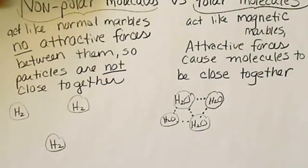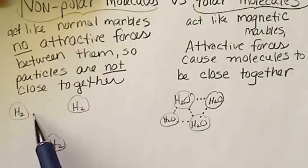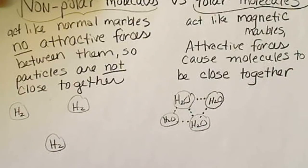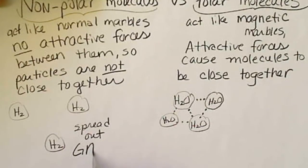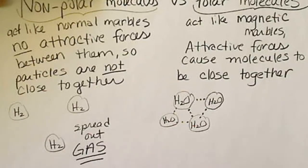For example, hydrogen. I've drawn that and this is supposed to be a big separation in space. There are no attractions keeping hydrogen molecules close to each other. Spread out generally means that compound exists as a gas.